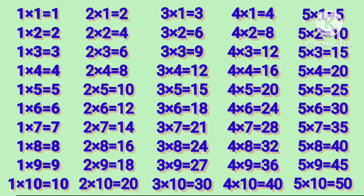1 tens are 10. 2 ones are 2, 2 twos are 4, 2 threes are 6, 2 fours are 8, 2 fives are 10, 2 sixes are 12, 2 sevens are 14, 2 eights are 16, 2 nines are 18, 2 tens are 20.